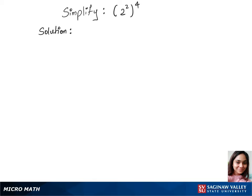To simplify this question, 2 power 2 whole power 4, we'll use the product rule of exponents. Just like A in the formula, we have the base 2 from the question. We can put the power as 2 times 4.